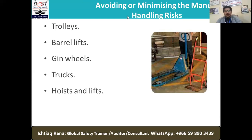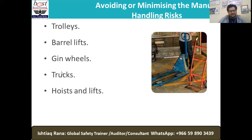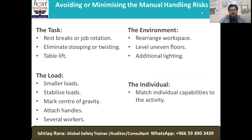Examples of handling aids include trolleys, barrel lifts, gin wheels, trucks, hoists, and lifts. Bear in mind these aids also bring their own hazards. For example, if some workers are using hand trolleys while others use forklifts, all working in the same warehouse, you need a system to prevent collisions and accidents. All four TILE factors — Task, Individual, Load, and Environment — must be considered.